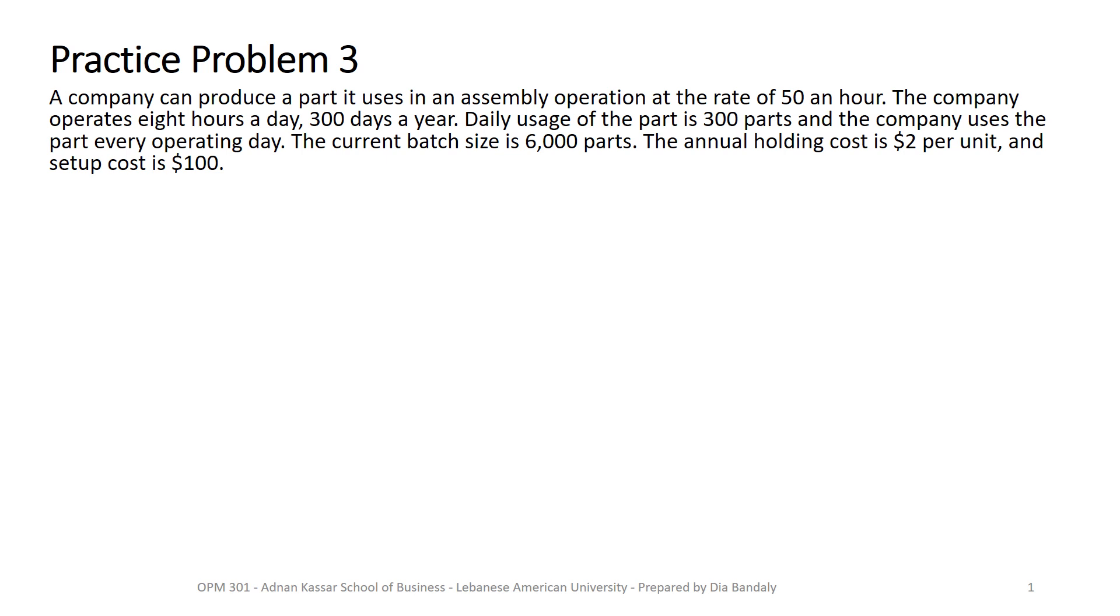And they can produce at a rate of 50 per hour. So this is our small p. The company operates eight hours a day, 300 days a year. Daily usage of this part, so in their assembly operation, they use it at a rate of 300 a day. So this is our small u.